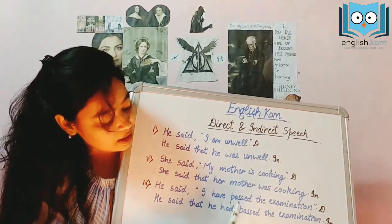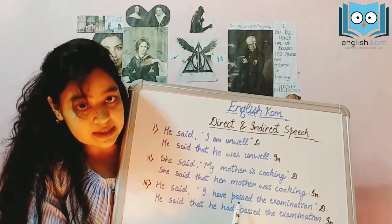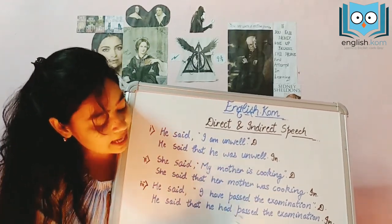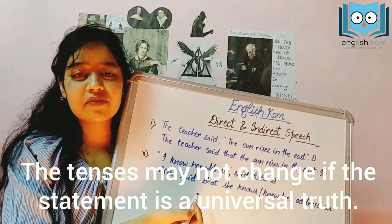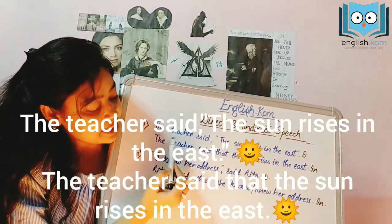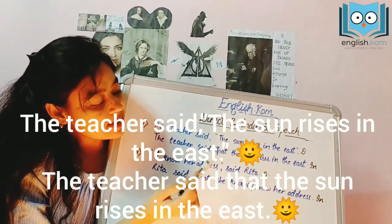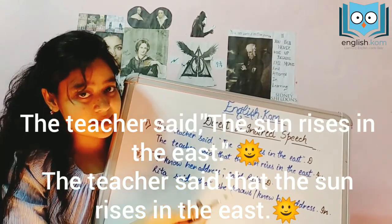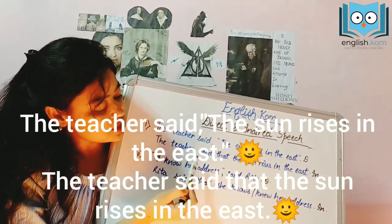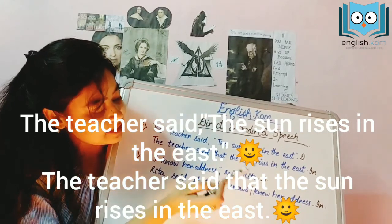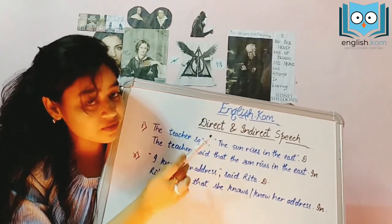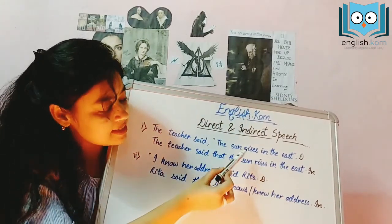So the present perfect 'have passed' gets converted to past perfect 'had passed'. However, the tenses may not change if the statement is a universal truth. For example, the teacher said, 'The sun rises in the east.' In the indirect form: the teacher said that the sun rises in the east. Since this is a universal truth, the tense does not change.